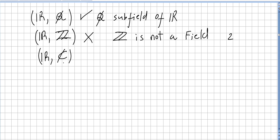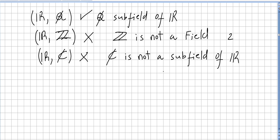What about ℝ over ℂ? No, because the complex numbers are not a subfield of the reals. If you have any problems with fields and subfields, please check my other playlists on abstract algebra or field theory. What about ℂ over ℝ? Yes, of course it is. And ℂ over ℚ? Yes, because the rational numbers are also a subfield of the complex numbers.